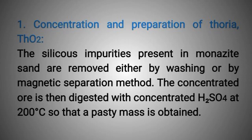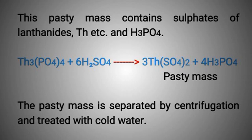Step 1: Concentration and preparation of thoria (thorium dioxide). The siliceous impurities present in monazite sand are removed either by washing or by magnetic separation method. The concentrated ore is then digested with concentrated sulfuric acid at 200 degrees centigrade so that a pasty mass is obtained. This pasty mass contains sulfates of lanthanides, thorium, etc., and phosphoric acid. Thorium orthophosphate plus 6 H₂SO₄ react and give 3 thorium sulfate plus 4 phosphoric acid as the pasty mass.